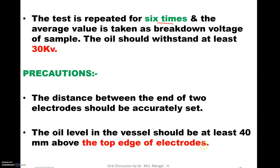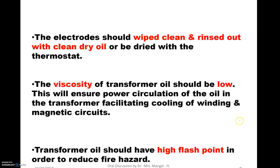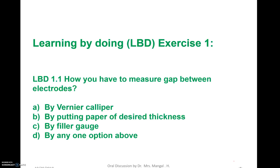The distance between the two electrodes must be accurately set — if it is different, breakdown voltage will be different. Oil level should be as per IS specifications as that also affects breakdown voltage. Electrodes and test cells should be thoroughly cleaned and rinsed with dry oil, because moisture or impurities will change the breakdown voltage. Viscosity of transformer oil should be low, as viscosity also affects breakdown voltage. Transformer oil should also have a higher flash point — if the flash point is low, it may cause fire in the oil.